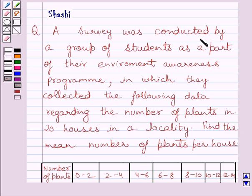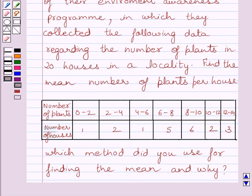A survey was conducted by a group of students as a part of their environment awareness program in which they collected the following data regarding the number of plants in 20 houses in a locality. Find the mean number of plants per house. This is the given data. Which method did you use for finding the mean and why?